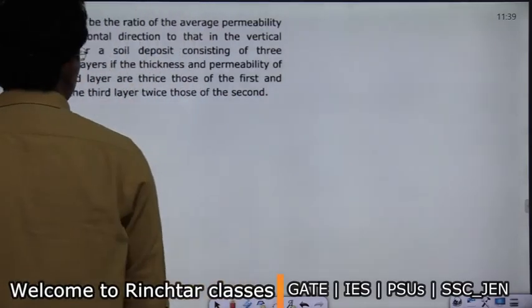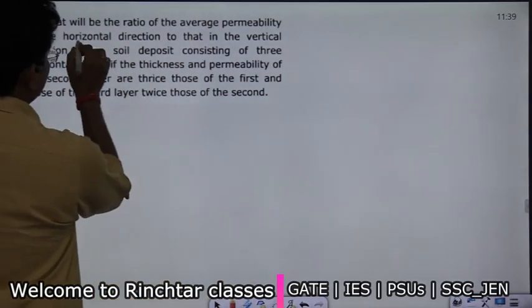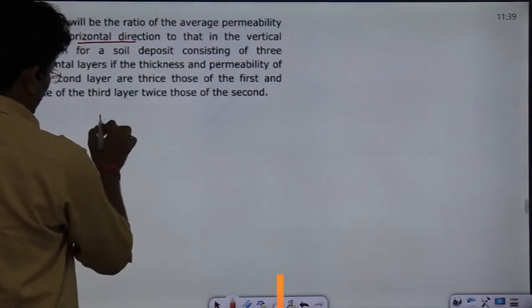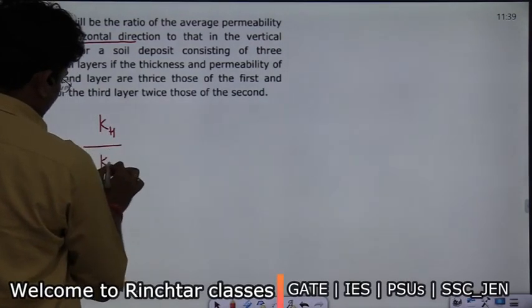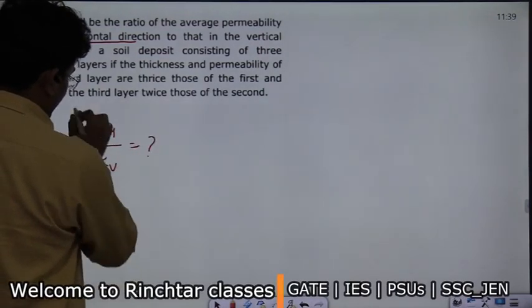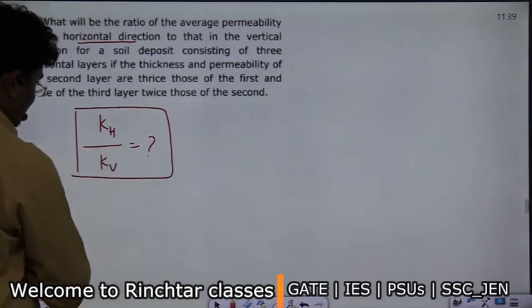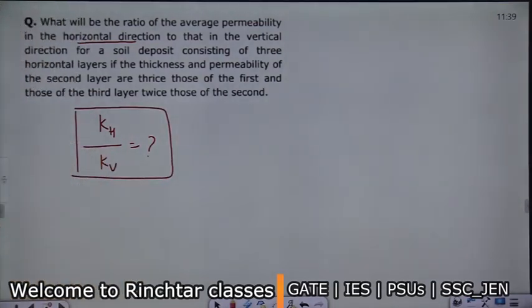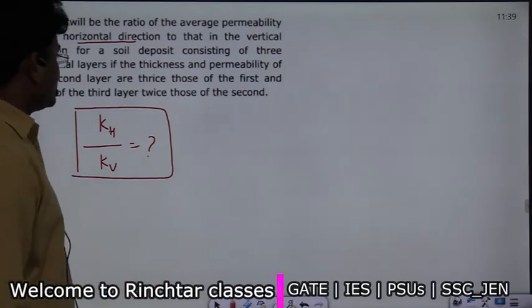What will be the ratio of the average permeability in the horizontal direction to that in the vertical direction, for a soil deposit consisting of three horizontal layers?